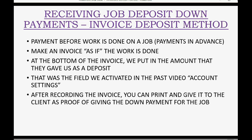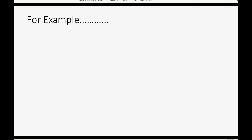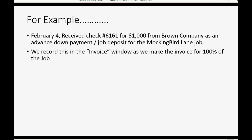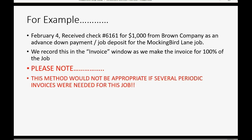After recording the invoice, you can print the actual invoice you just recorded and give it to the client as proof of having given the down payment for the job. For example, let's imagine on February 4th we receive check number 6161 for $1,000 from Brown Company as an advanced down payment job deposit for the Mockingbird Lane job. We will record this in the invoice window as we make the invoice for 100% of the job. Please note, this method would not be appropriate if several periodic invoices were needed — it's only appropriate for a one-invoice job.